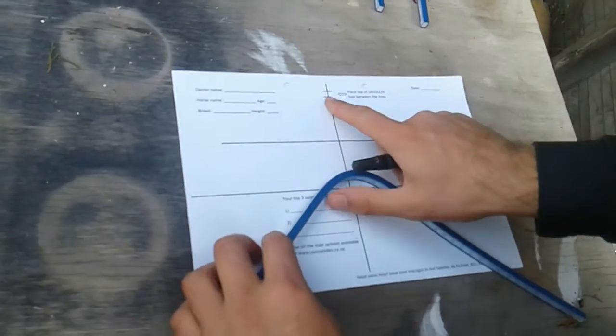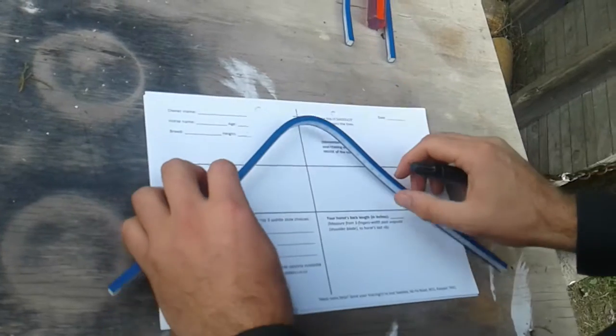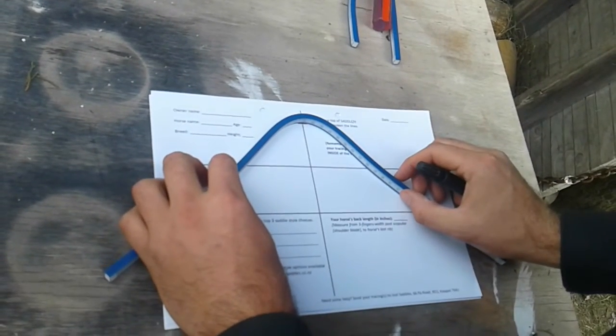Ok, so you can see these two lines here, that's the exact position of where you want to place your saddle footing tool. It goes bang in the middle.